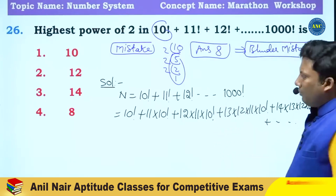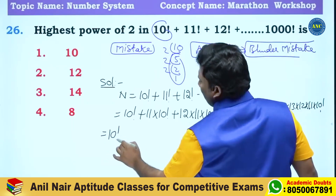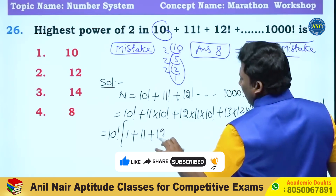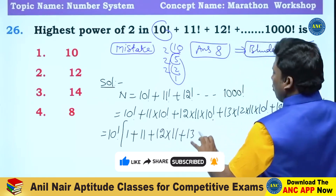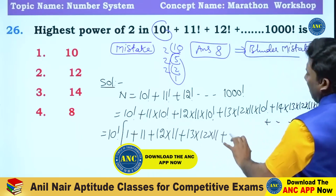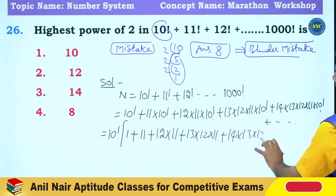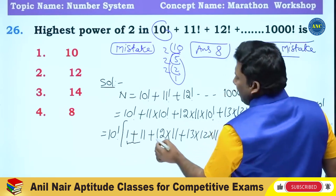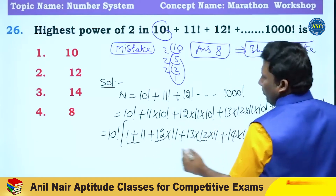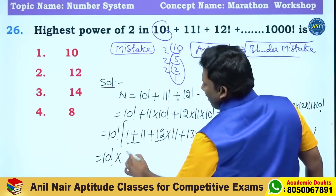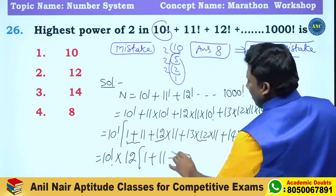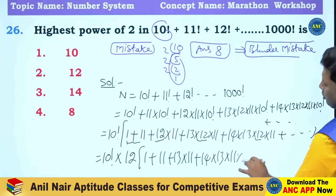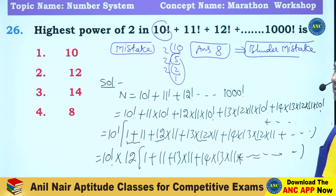Now let me take 10 factorial common: 10 factorial into (1 plus 11 plus 12 into 11 plus 13 into 12 into 11 plus 14 into 13 into 12 into 11 and so on). Again, 12 appears in each term from the second onward, so take 12 common: 10 factorial into 12 into (1 plus 11 plus 13 into 11 plus 14 into 13 into 11 and so on).